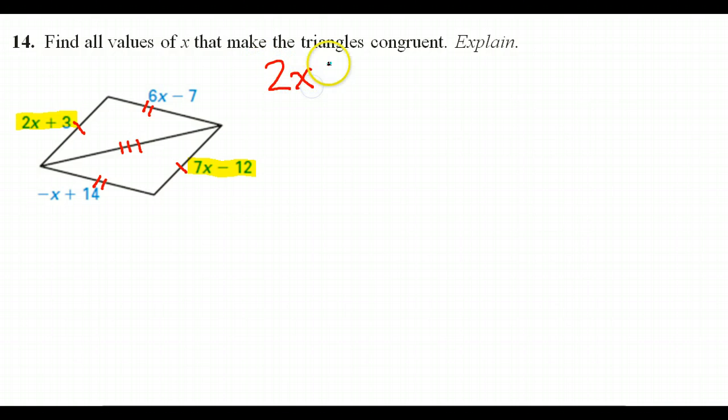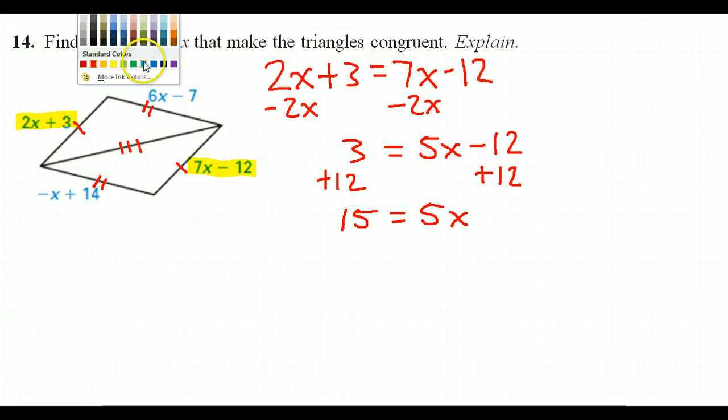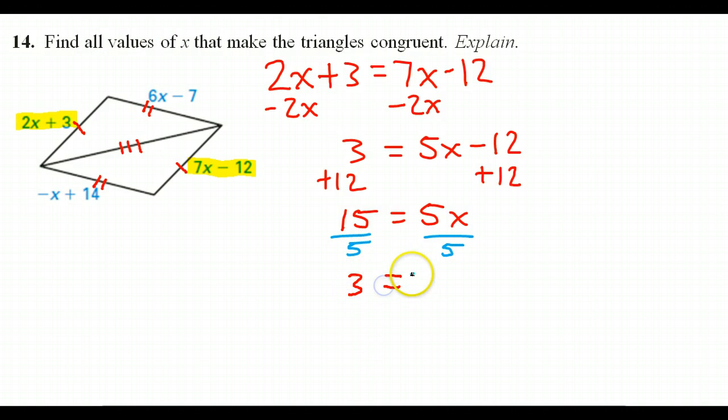I can make the equation 2x plus 3 should equal 7x minus 12. And let's solve this and see if we get a valid answer. So, if we subtract 2x from both sides, then that's going to give us 3 equals 5x minus 12. Adding 12 to both sides, that's going to give us 15 equals 5x. Dividing both sides by 5, that's going to give us x equals 3.